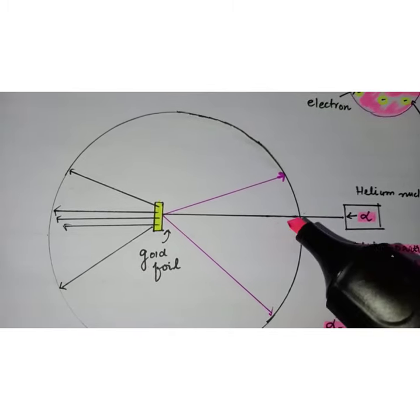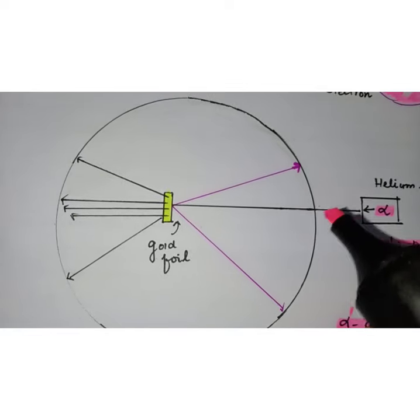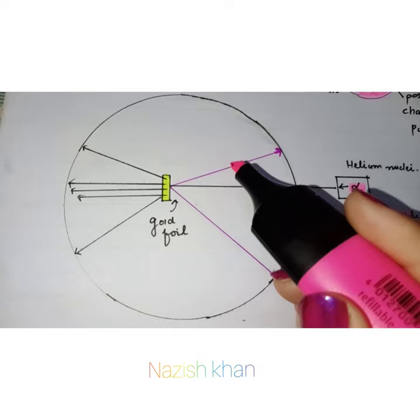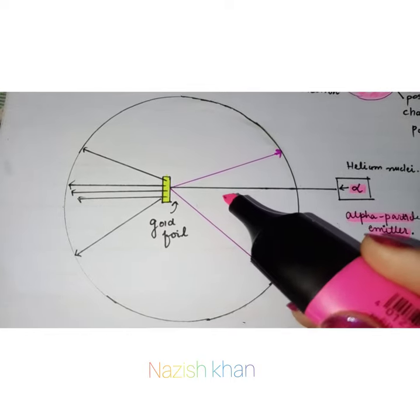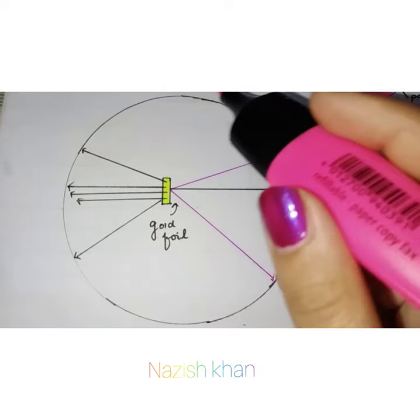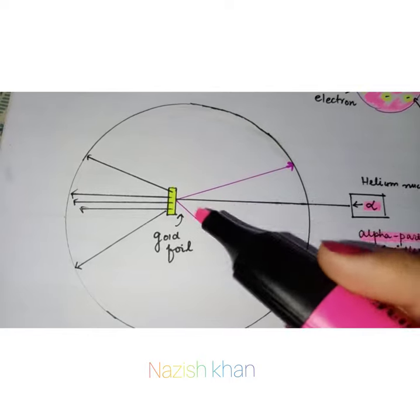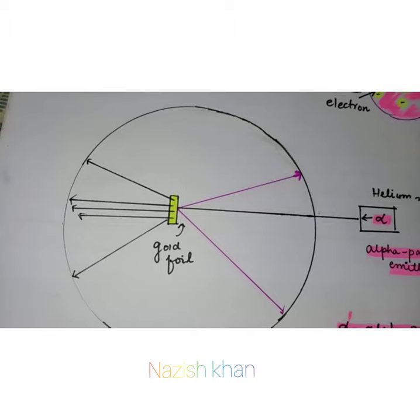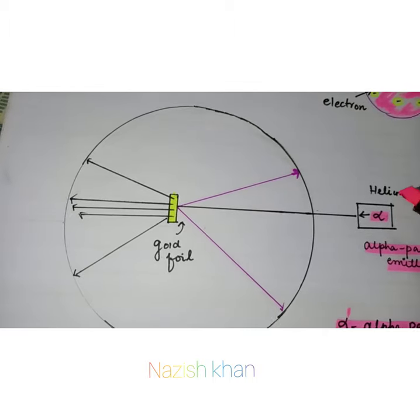They wanted to know what happens to the alpha particles after they hit the gold foil. For this they used a material that flashes when it gets hit by the alpha particles, bent into a circle, so whenever the alpha particle hits they will see a flash.